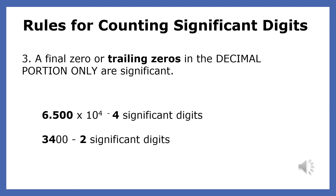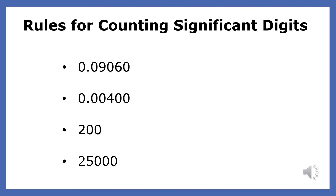Let's look at two more examples. 6.500 × 10⁴ has four significant digits because trailing zeros count in a decimal. 3,400 has only two significant digits because trailing zeros do not count when it's not a decimal. Trailing zeros only count in decimals.